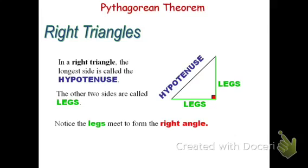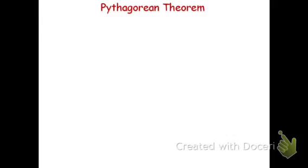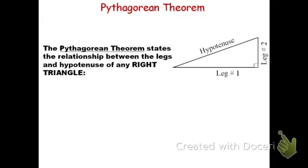Now these terms — legs and hypotenuse — are only used for right triangles. If it's not a right triangle, we refer to them as just the sides. Now there's a special relationship that works only for right triangles, and it compares the legs and the hypotenuse of a right triangle. It is known as the Pythagorean Theorem.